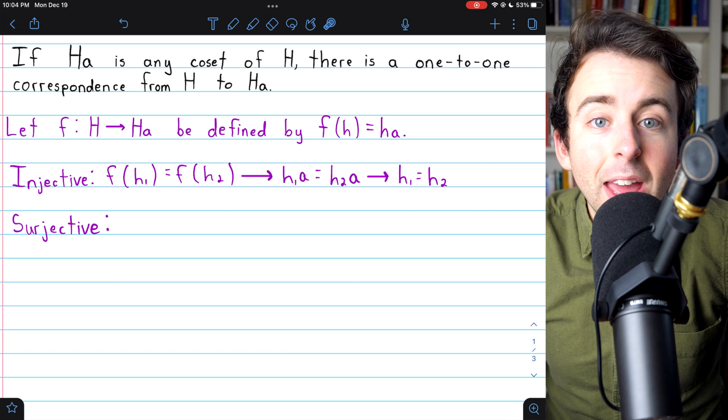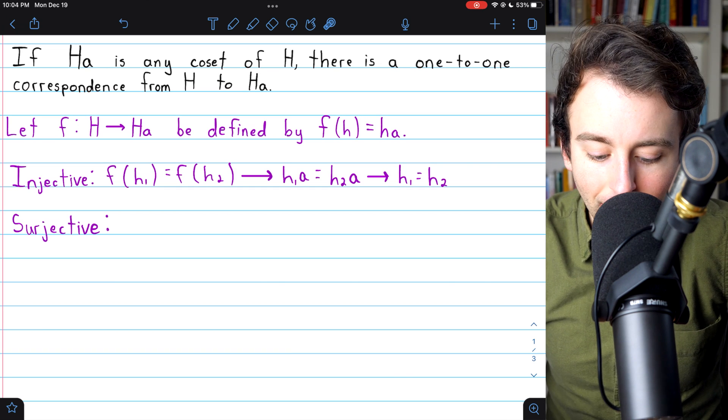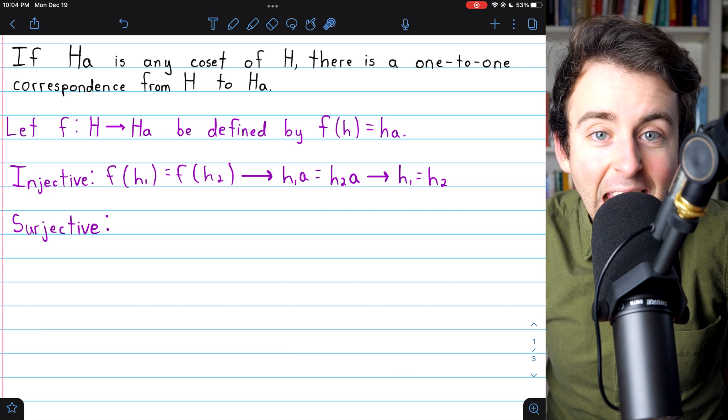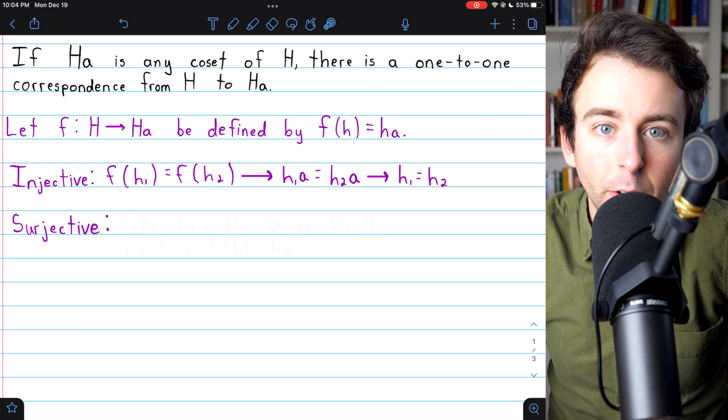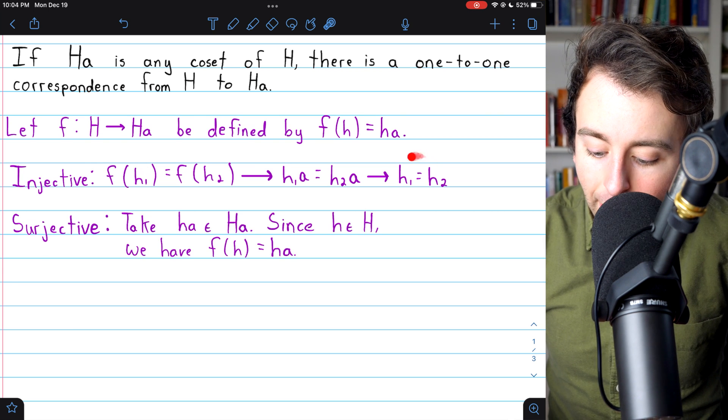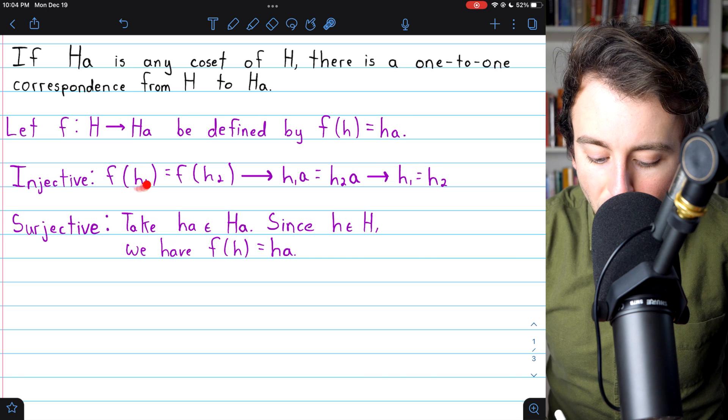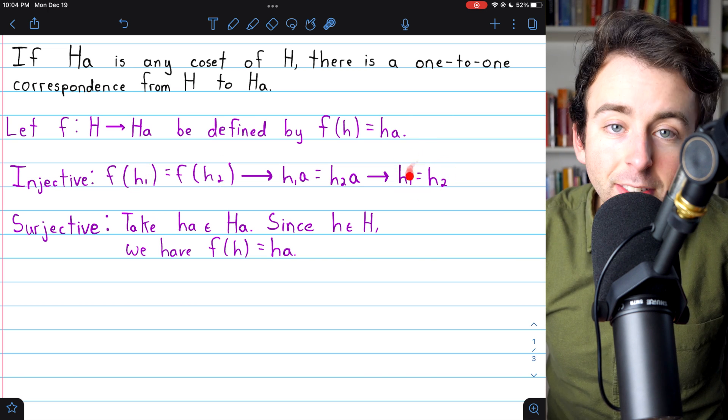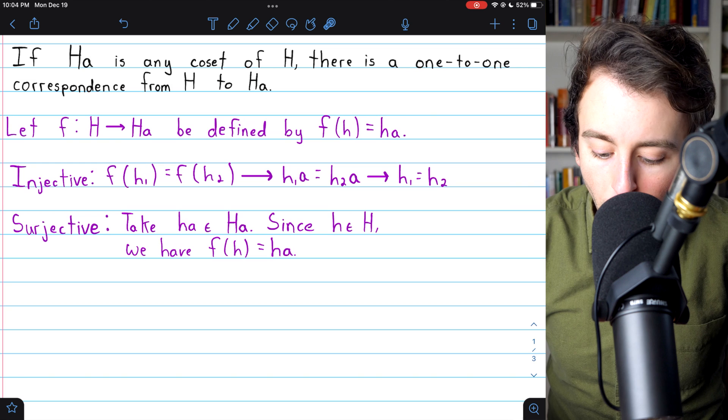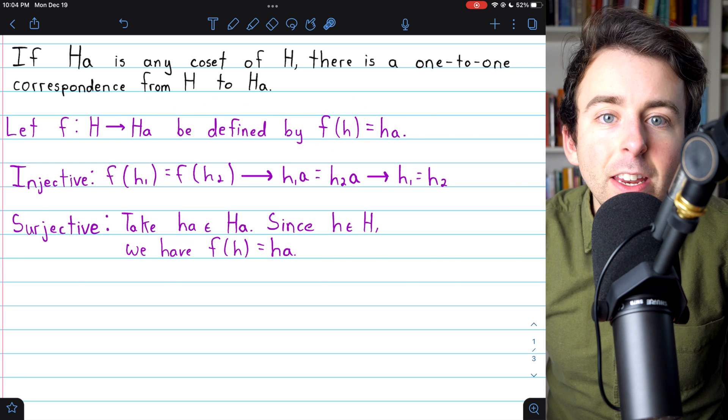And of course, we know that a inverse is a thing because a comes from the containing group G. It's a group, so it's got inverses. So we arrive at the desired result, that the inputs h₁ and h₂ must be equal. Thus, our function F is injective.